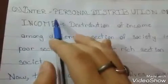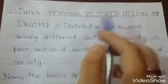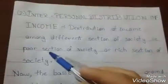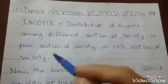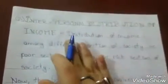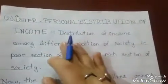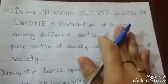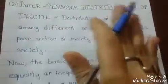The second aspect is interpersonal distribution of income — the distribution of income among different sections of society, that is the poor section and the rich section. The question is: for whom are we producing? We can set a higher price so only the rich can afford it, or we can set a lower price to make goods available for everyone.